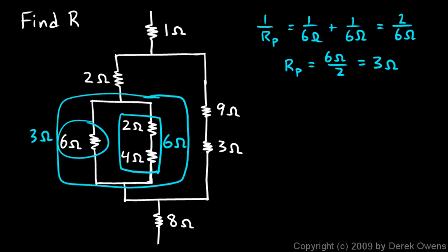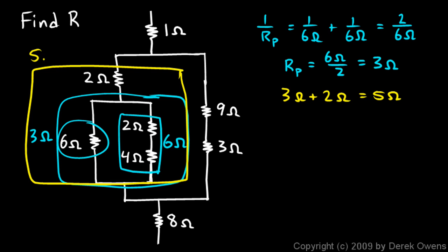Now that 3 ohm right here, this thing, and this 2 ohm are in series, and 3 ohms plus 2 ohms is 5 ohms. So let me make a little bigger circle right here - it helps to have different colors here - that's 5 ohms. Now it's also pretty clear that this 9 and this 3 add up to 12 ohms.